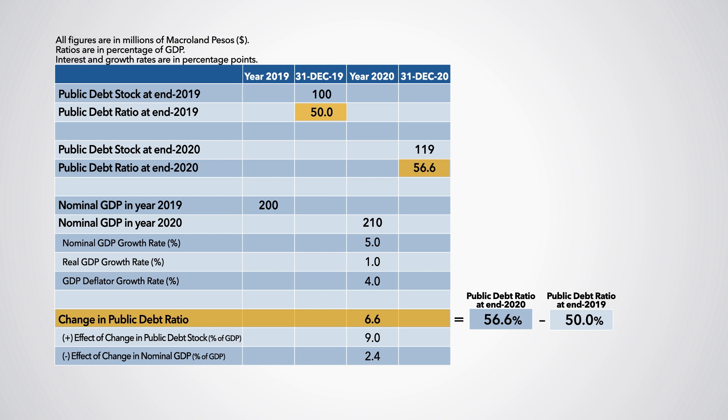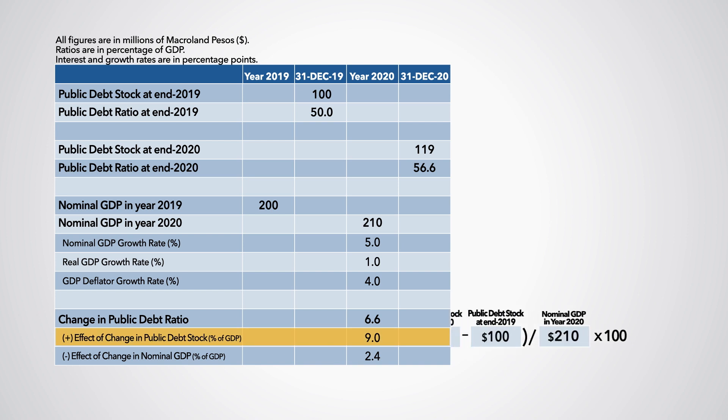This increase in the public debt ratio by 6.6 percentage points can be explained by two effects. First, the effect of the change in the public debt stock, which can be computed as the change in the debt stock divided by the 2020 GDP. This effect pushes the debt ratio up by 9 percentage points.